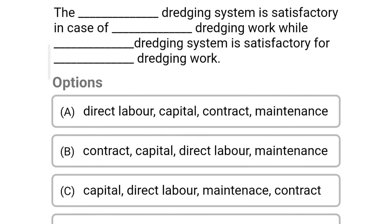Next question: the dash dredging system is satisfactory in the case of dash dredging work, while dash dredging system is satisfactory for dash dredging work. Option A, direct labor, capital, contract, maintenance; option B, contract, capital, direct labor, maintenance; option C, capital, direct labor, maintenance, contract; option D, none of the above. The correct answer is option B: the contract dredging system is satisfactory in the case of capital dredging work, while direct labor dredging system is satisfactory for maintenance dredging work.